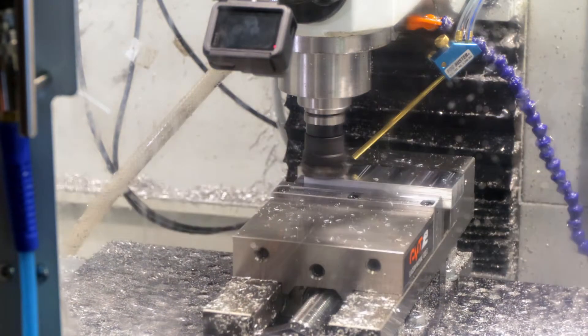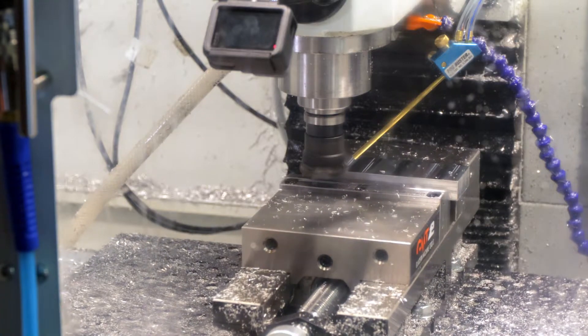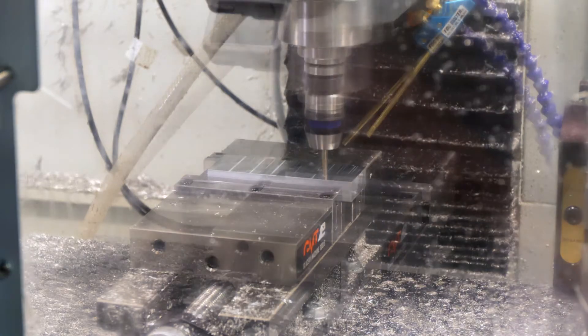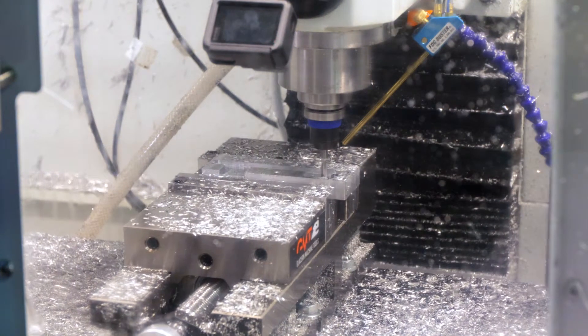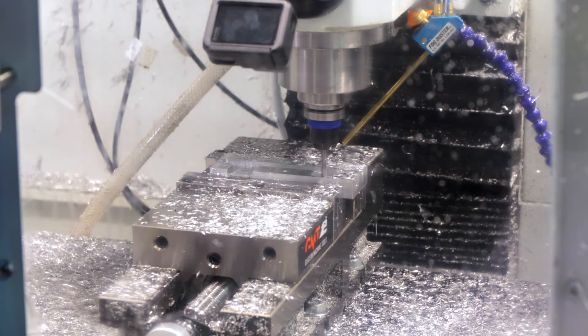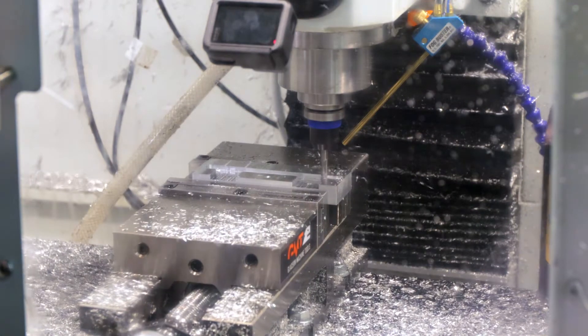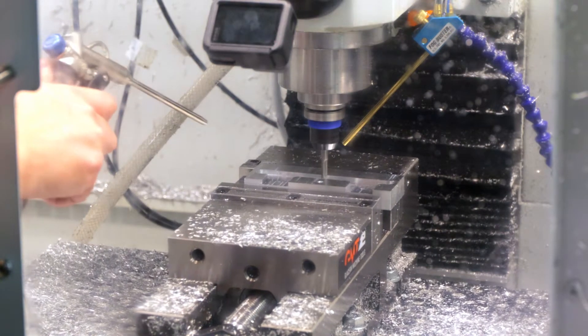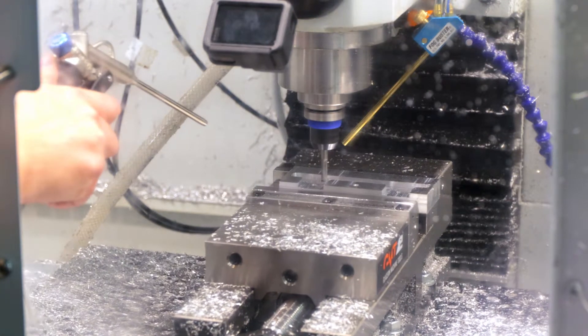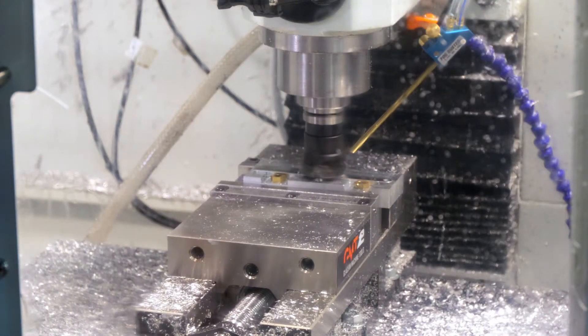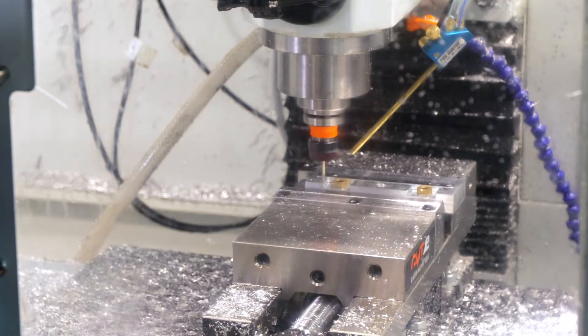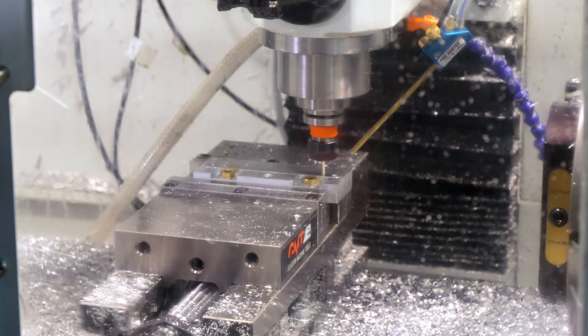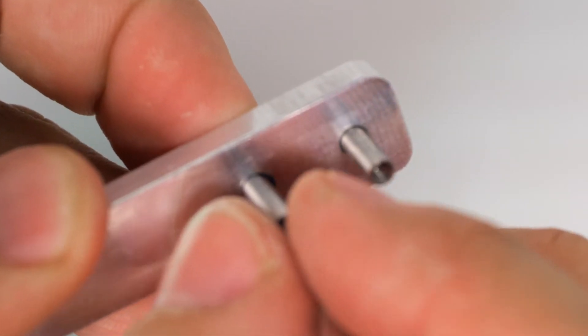I machined away the material and then tried fitting in the first operation handle into the fixture, and then run a few extra passes because it was too tight. All that happens in the second operation is facing off the extra thickness that was used to hold it in the vice in the first op, and counter-boring the holes so that the threaded tubes can be positioned accurately.